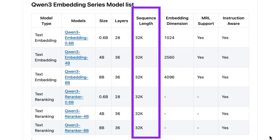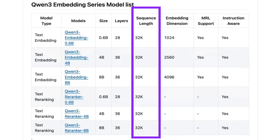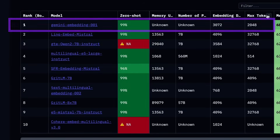I wouldn't recommend using that full 32K length — I don't think there are a huge number of use cases for that. Generally, you want to keep your sequences much shorter if you're going for something like RAG. But it does mean we can comfortably go out to 8K, as opposed to something like the Gemini embedding model, which can only do a max of around 2,000 tokens.